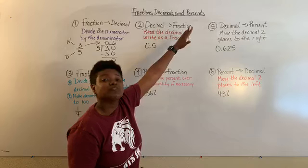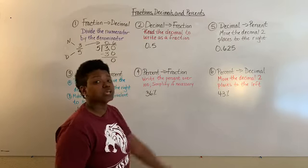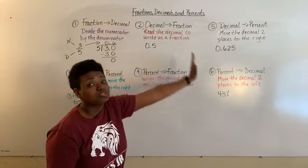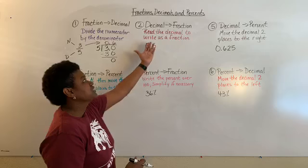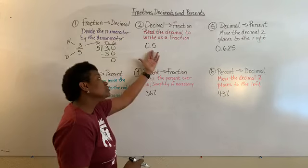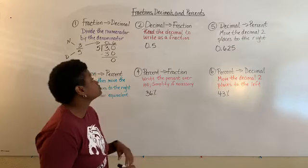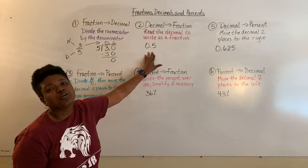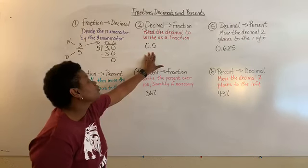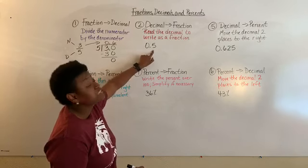To convert a decimal back to a fraction, you read the decimal to write it as a fraction. This is the easiest conversion out of all six. You read it in the place that it's in — so 0.5 is read as five...